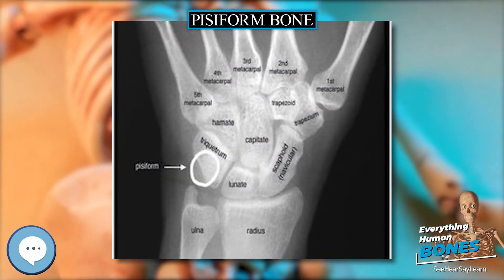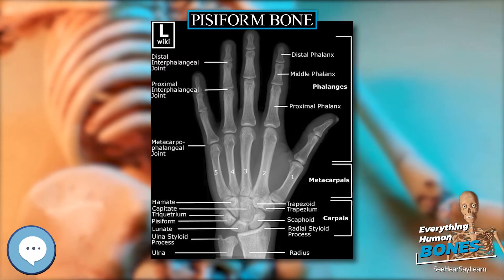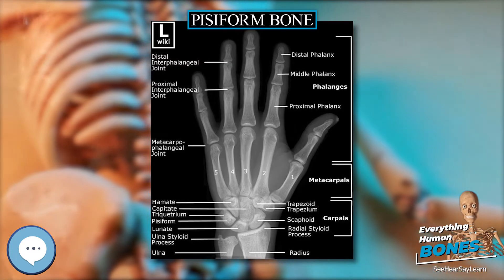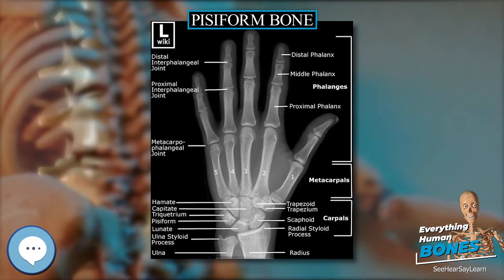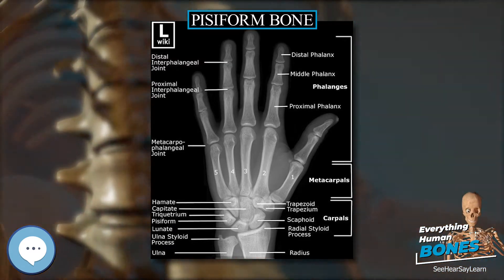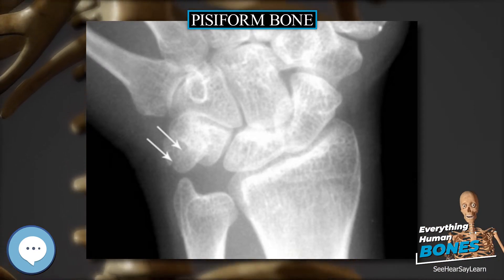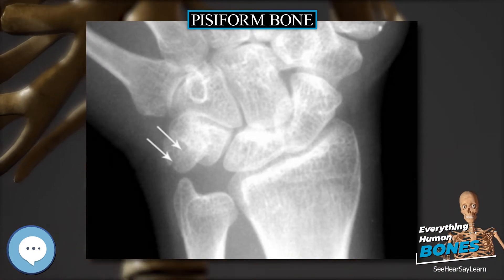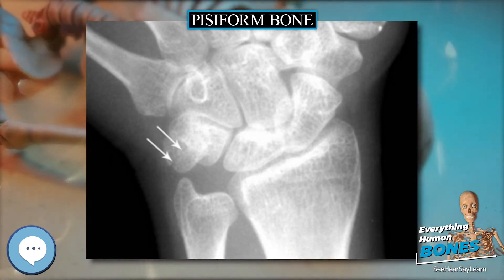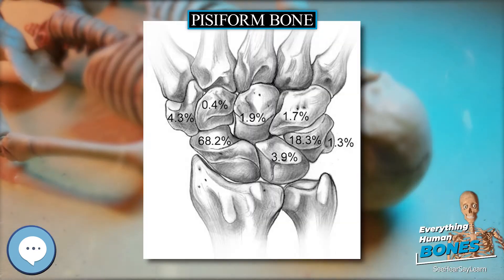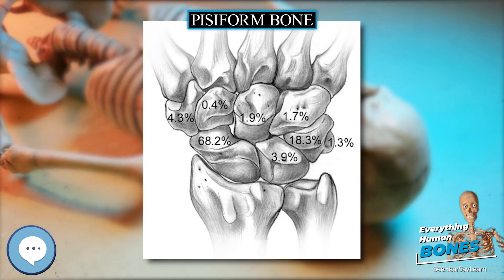It only has one side that acts as a joint, articulating with the triquetral bone. It is on a plane anterior to the other carpal bones and is spheroidal in form. The pisiform bone has four surfaces.